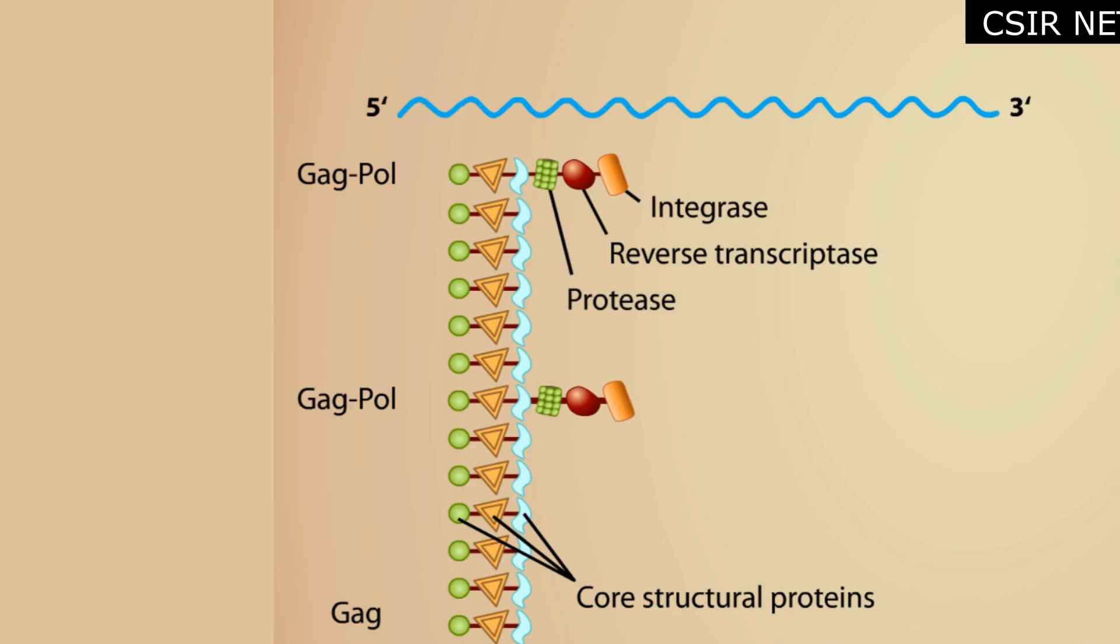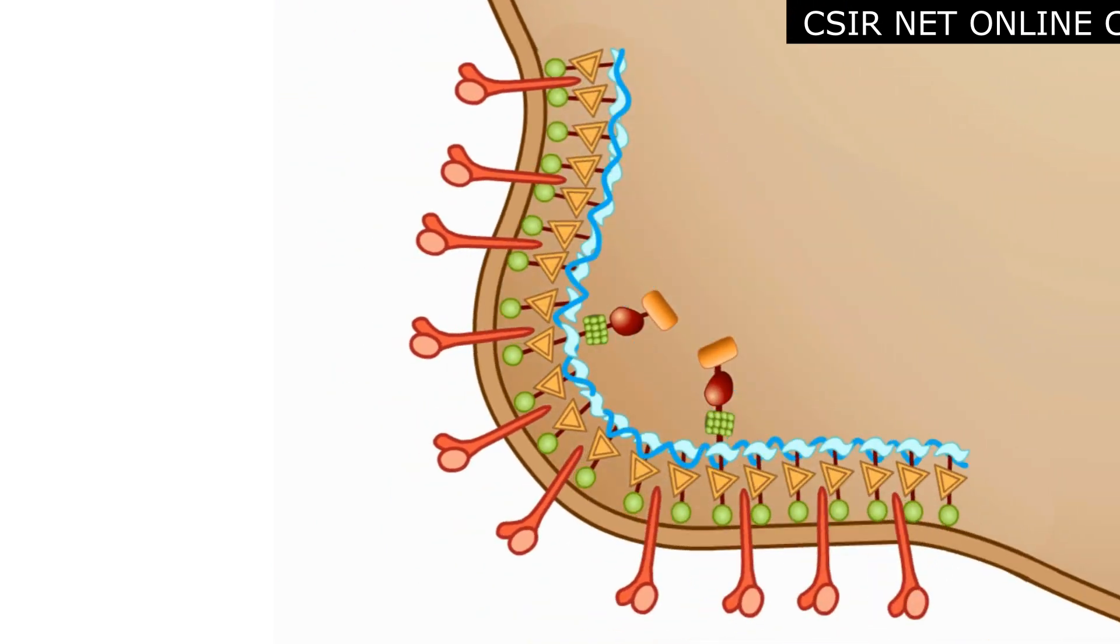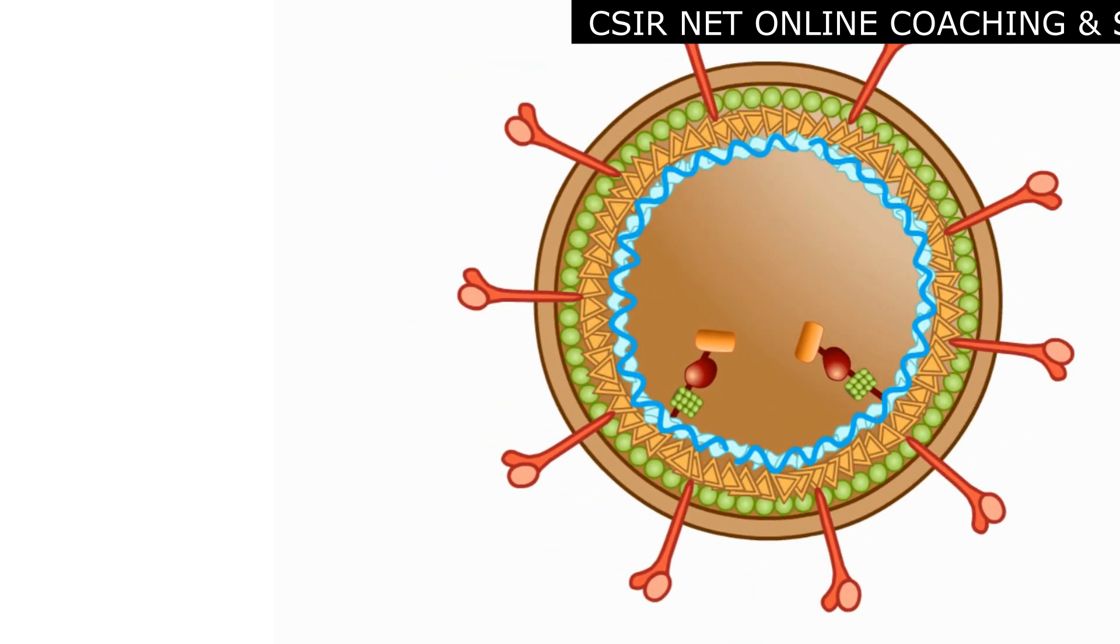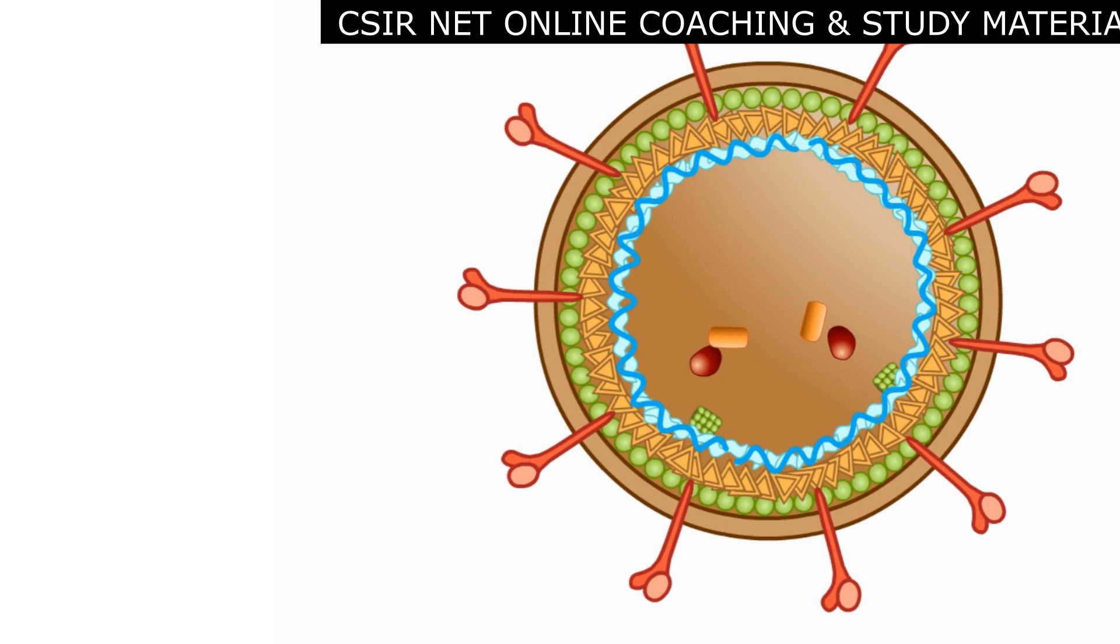The polyproteins along with other viral proteins, twin RNA molecules and envelope proteins come together at the plasma membrane, where a viral particle begins to bud off. At this stage, the protease, which is a part of the GAG-POL polyprotein, cuts itself out of the polyprotein.